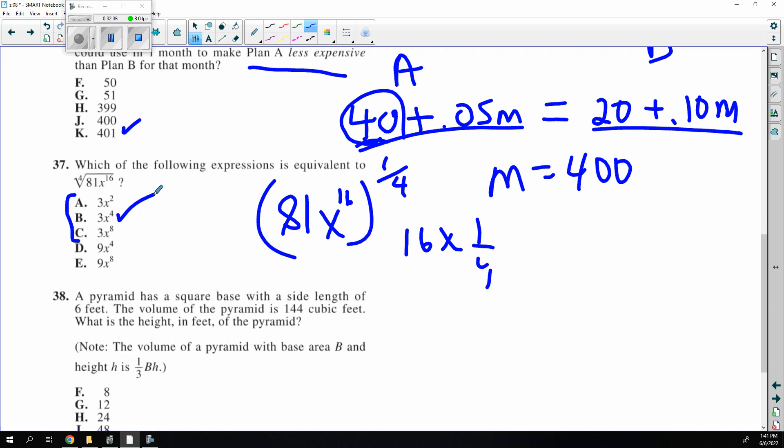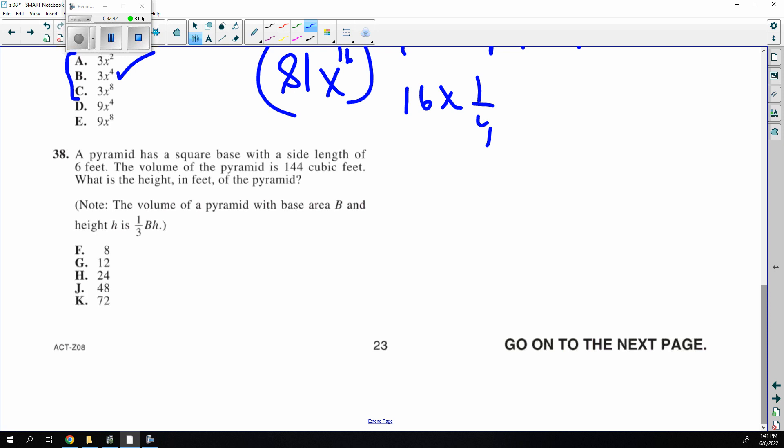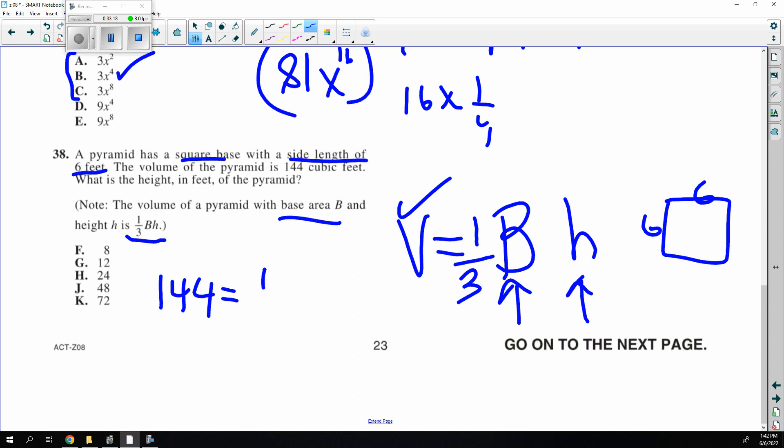This is a famous formula. Volume of a prism is base times height, with the base being the area of the base. But with a pyramid, because you're missing 2 3rds of it, it's 1 3rd. Ha ha, they gave it to me anyway. So they say the volume is 144. They're giving me the volume. And we're having a square base with a side of 6. So that means the area of the base is 6 times 6, 36. So what's the height? And you could put that into Solver. Most people would just go 1 3rd of 36 is 12, and then divide both sides by 12. That's a little faster and easier to get G.